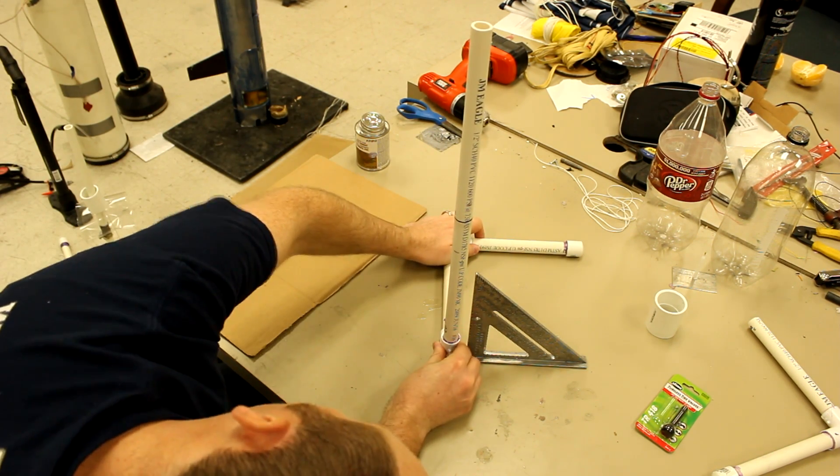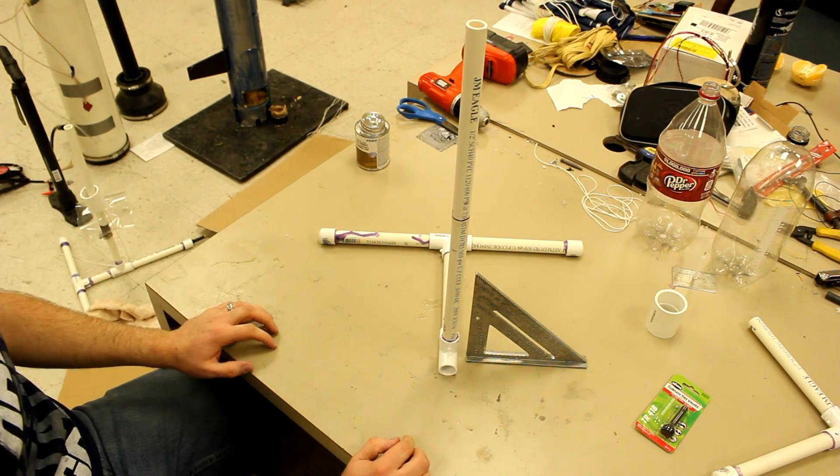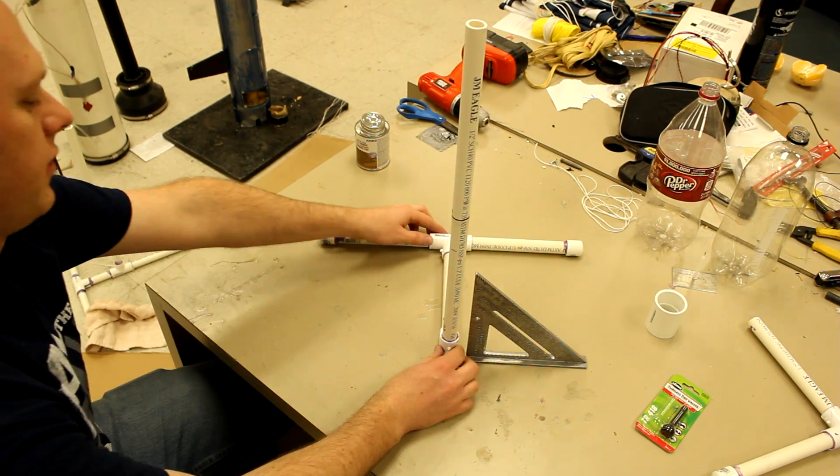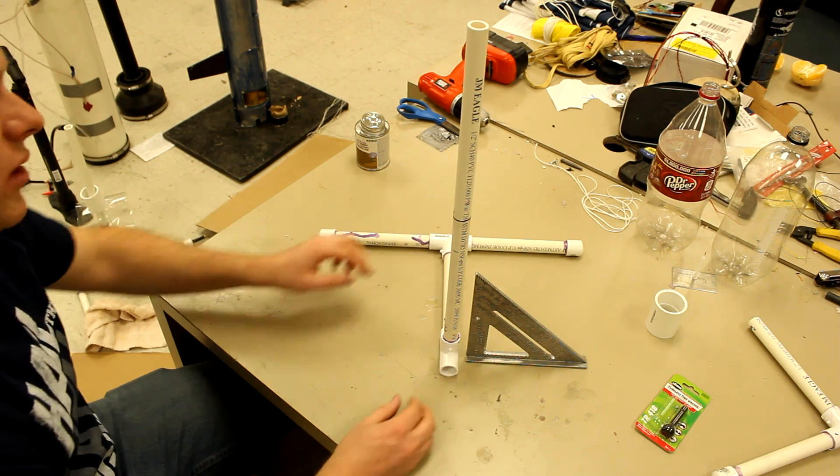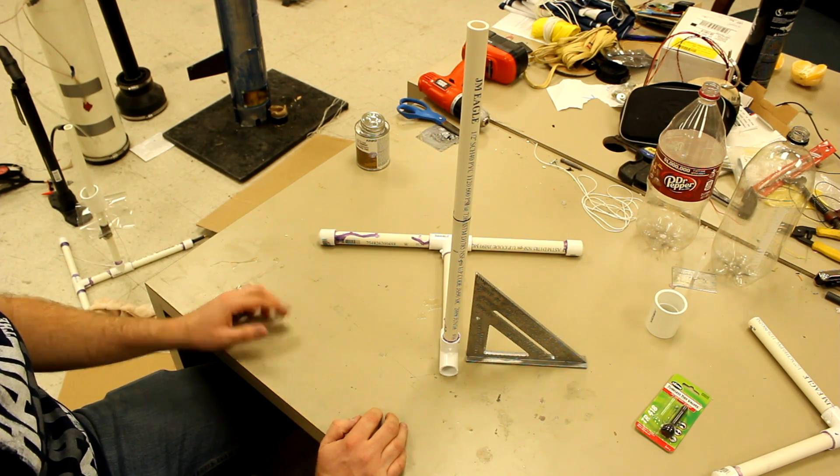We want to do that on a nice flat surface so that you can see that it's vertical. As you can see, we're pretty close. Definitely close enough. Now we'll let that dry for just a second, and then we'll add on our second tee.